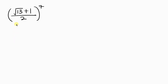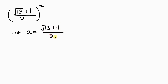Now we introduce substitution. Let a be equal to what we have inside the brackets, which is the square root of 13 plus 1, all over 2. That means what we're actually looking for is a to the 7, and after finding that, we'll have our final result.